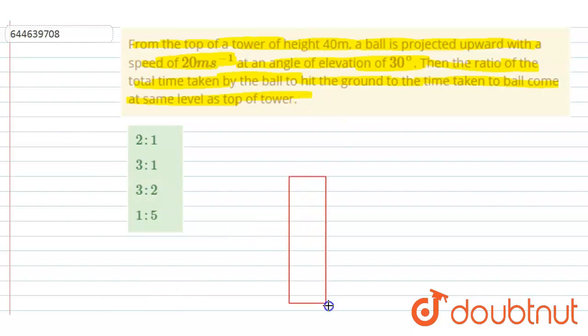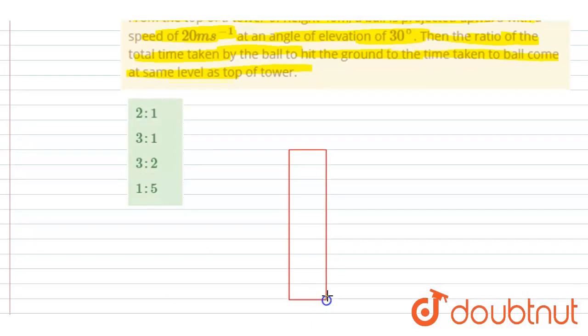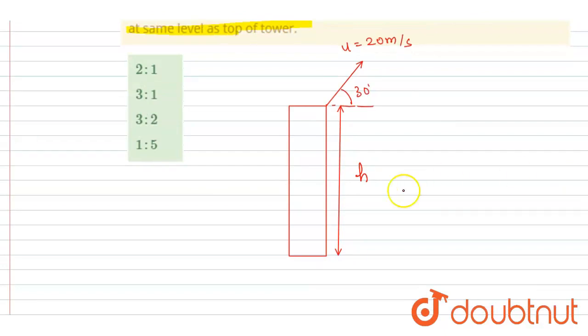So if I see, the tower height is 40 meters, right? And from this tower, the ball is projected at an angle of 30 degrees with a speed of 20 meters per second like this. And this height is given, it is 40 meters.